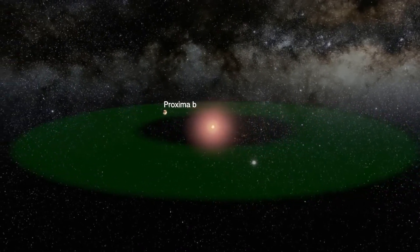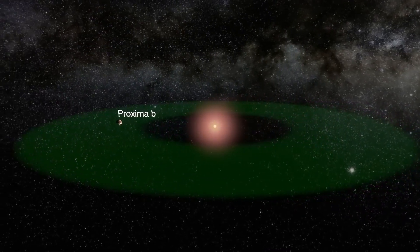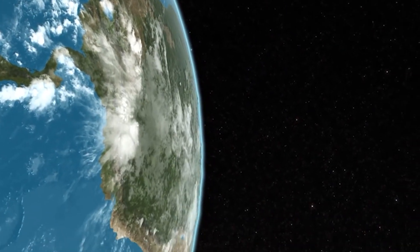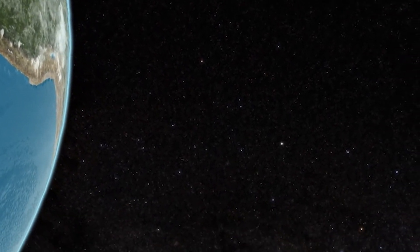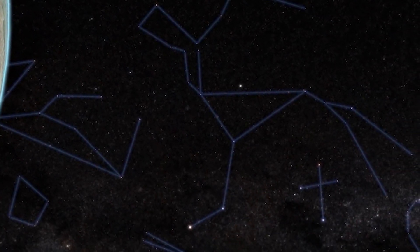By observing the regular subtle changes in the color of Proxima Centauri, which is about 4.2 light-years away from Earth, scientists have simply concluded that Proxima B is exactly where it should be.